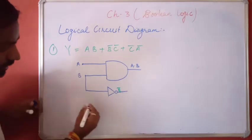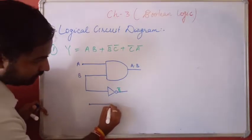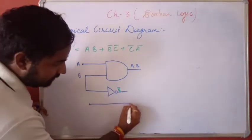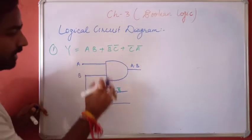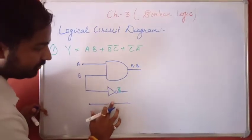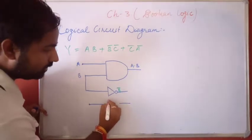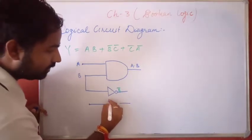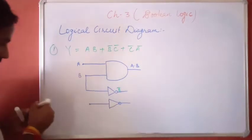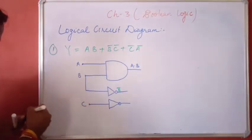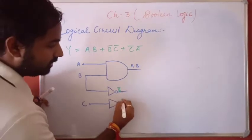Then for C, we have to implement a NOT gate. This represents B̄C̄. In C also we have to implement a NOT gate.